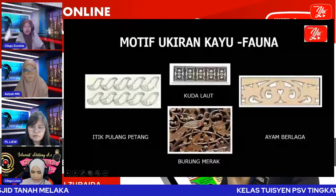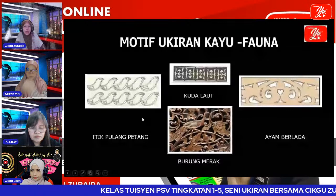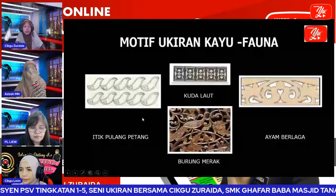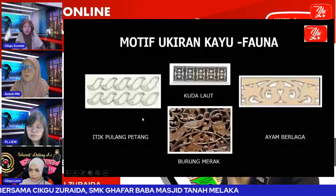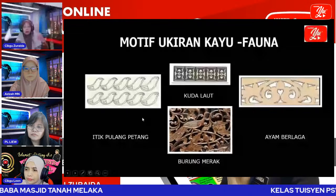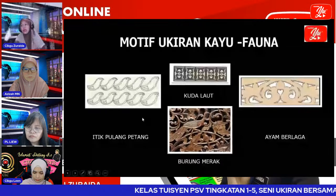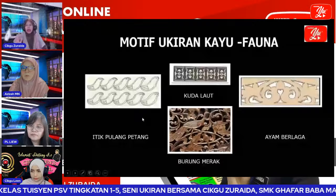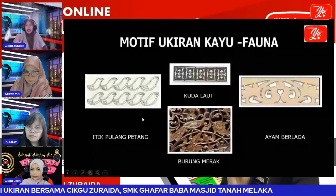Manakala motif fauna lain: contoh kuda laut. Kalau kamu lihat motif ni, dia sebenarnya asal kuda ni berdua, berpasang. Dan ini pun ayam berlaga — cara nak kenal mana ayam dia: ni satu kepala ayam, ini satu lagi ayam, berlaga, berlawan. Inilah burung merak — satu contoh bagaimana nak mengingat motif-motif.